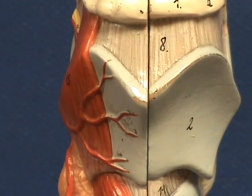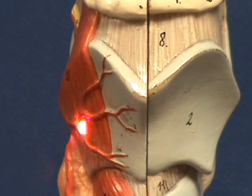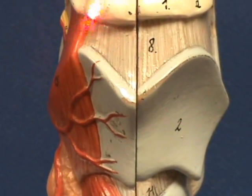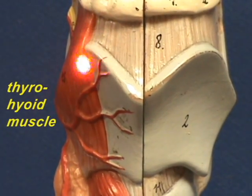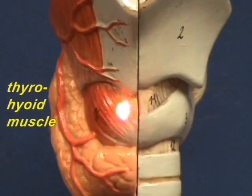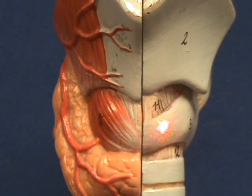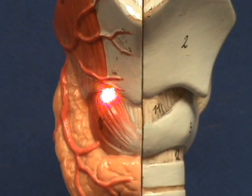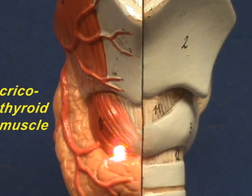The muscle right over here that goes from the thyroid cartilage to the hyoid is appropriately named the thyrohyoid muscle. This muscle over here that goes from the cricoid cartilage to the thyroid cartilage is referred to as the cricothyroid muscle.